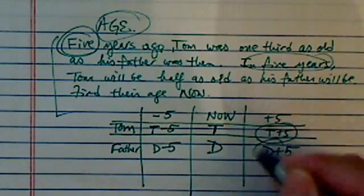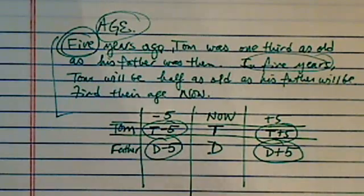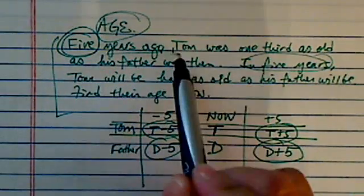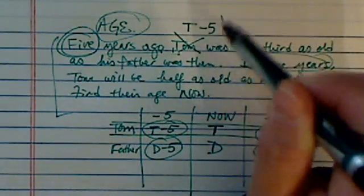Once you get those ones set, the word problem becomes relatively easy to solve. Let's read through. Five years ago, so how old was Tom? Tom was not T, but T minus five.